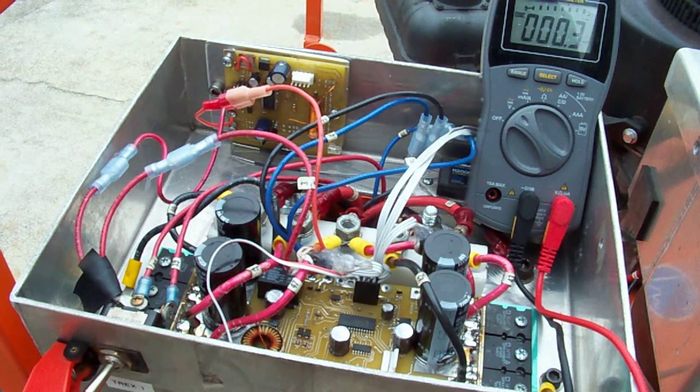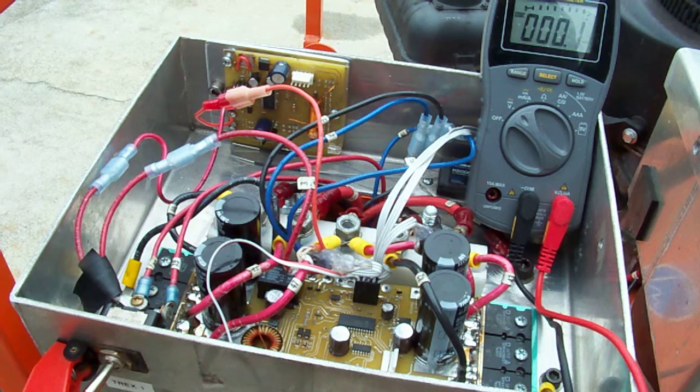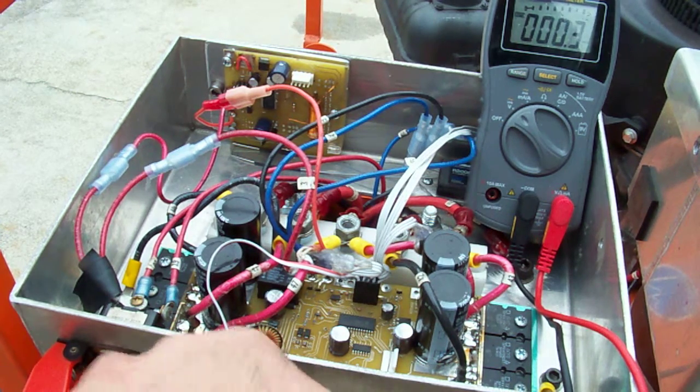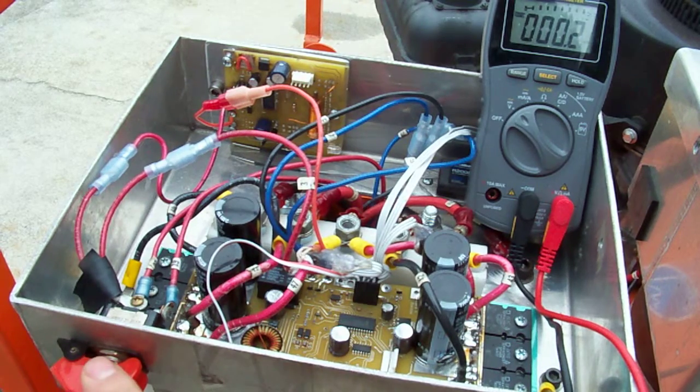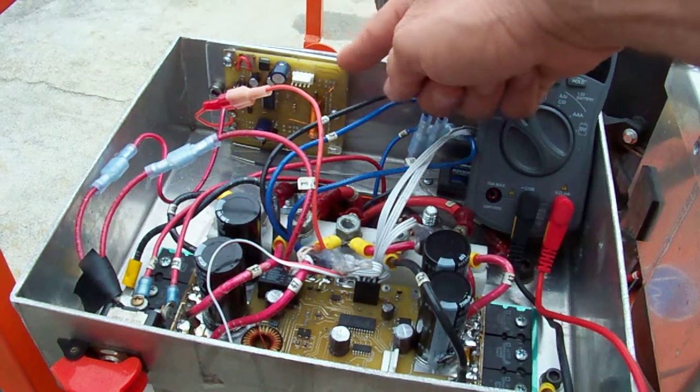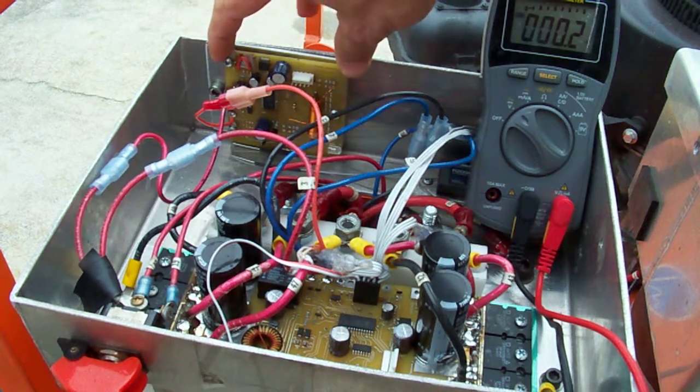What we're going to do is check the output voltage of the DC to DC booster. We're going to turn off the main switch right here and I'm going to point at the DC to DC booster.